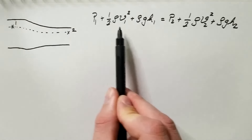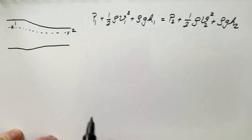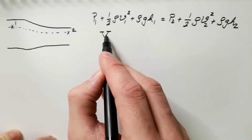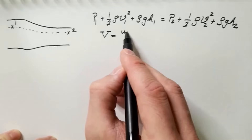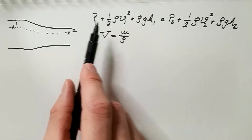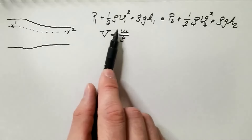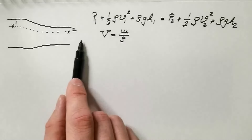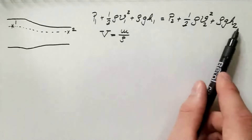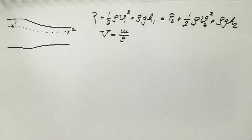Bernoulli's equation is basically the statement of conservation of energy. If I multiply this equation by volume V, knowing that volume equals mass over density, I get: PV, which is internal energy; ½mV², which is kinetic energy; and mgH, which is gravitational potential energy. So Bernoulli's equation in this form is really energy per unit volume — each of these terms is energy per unit volume.